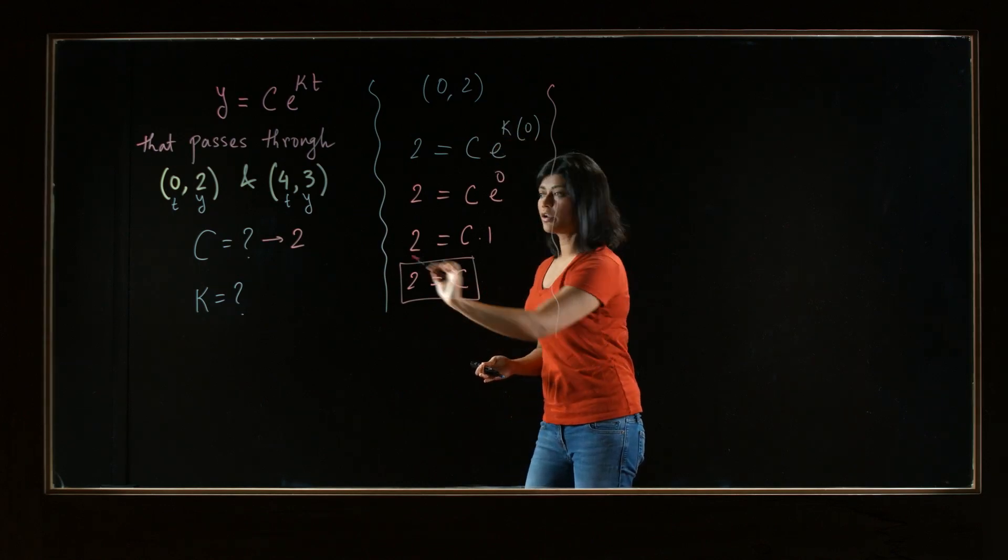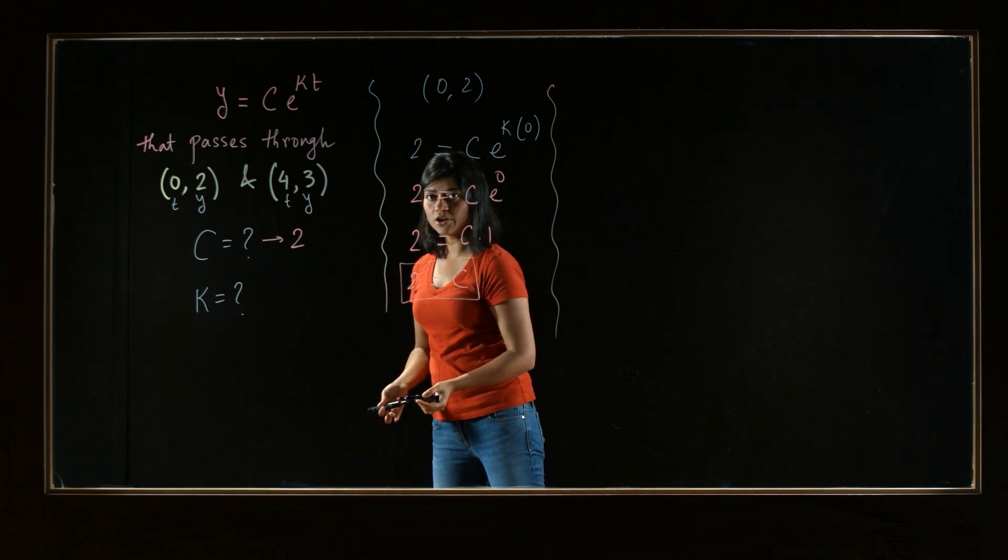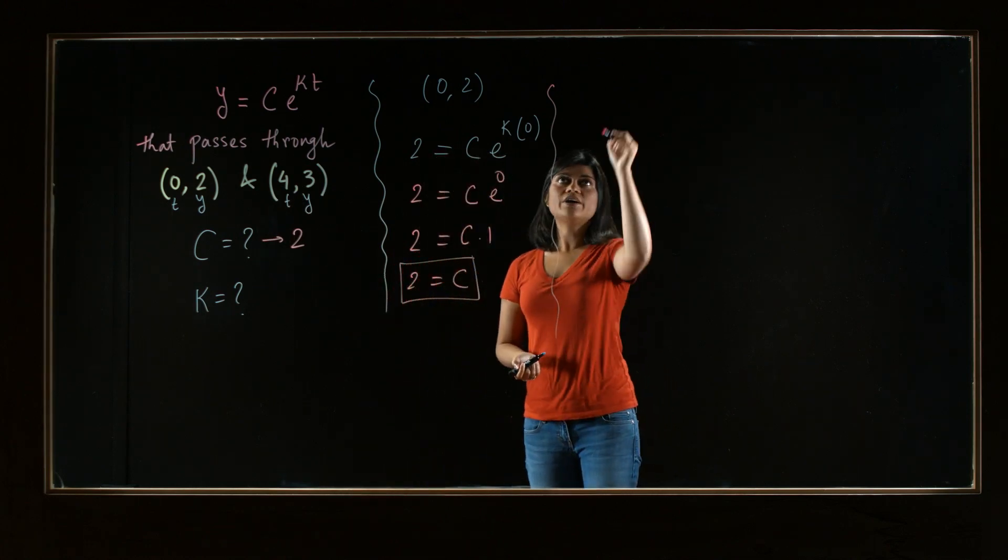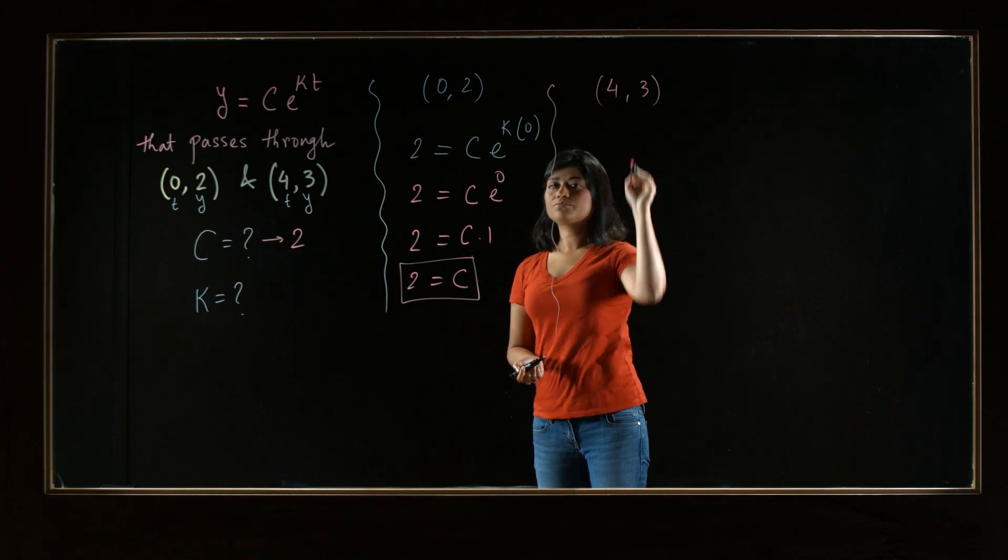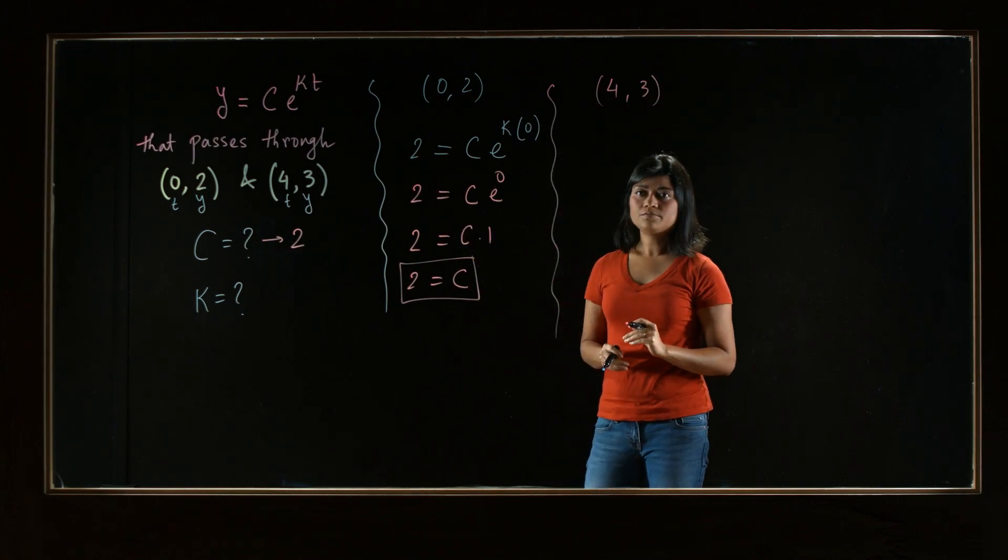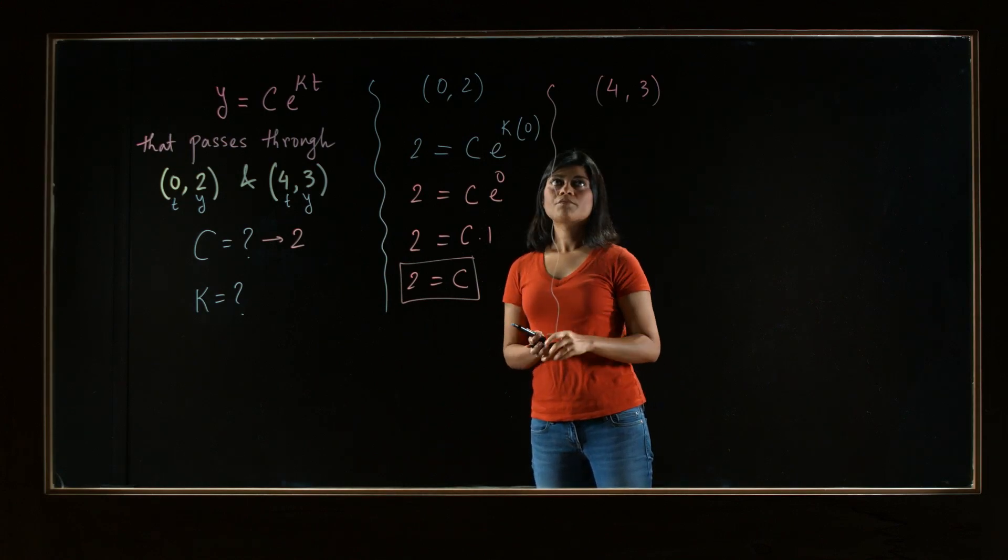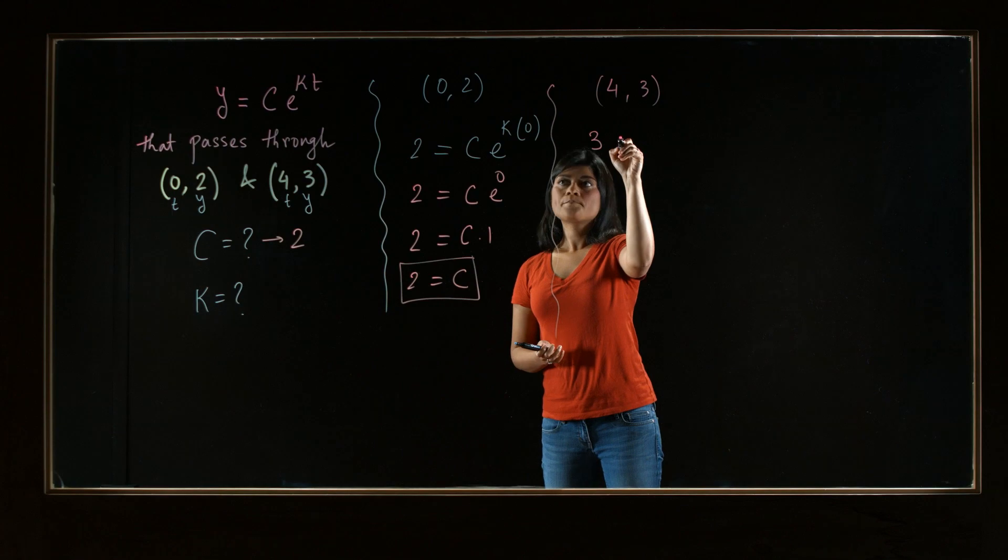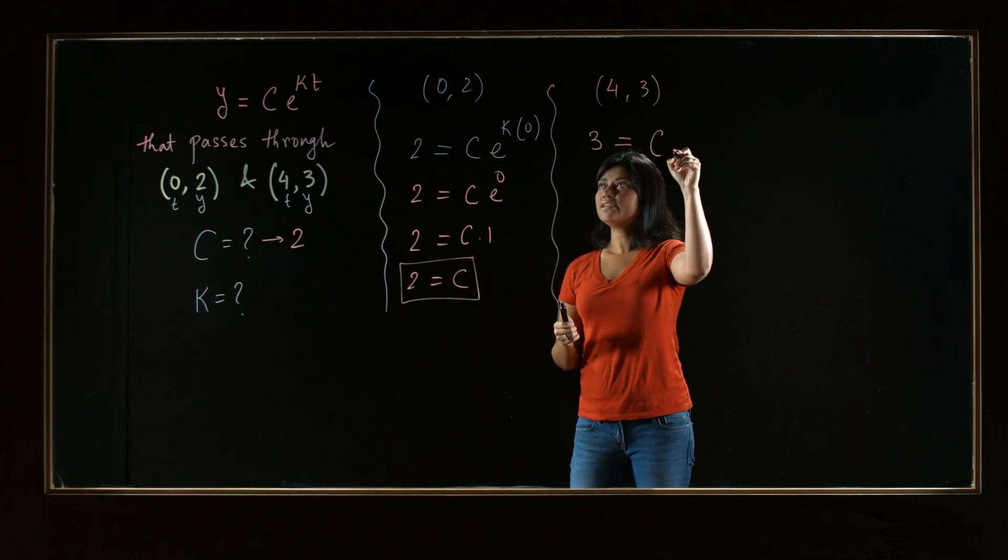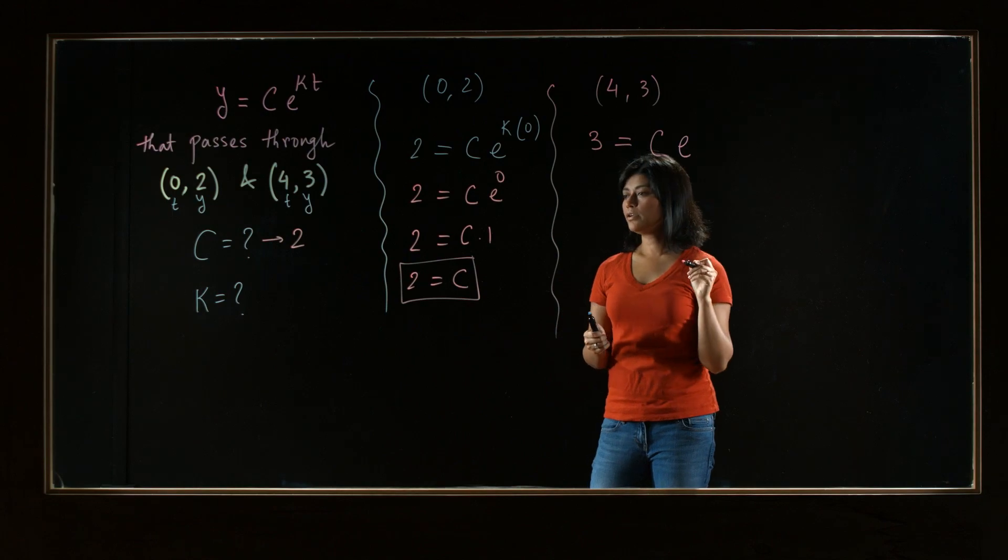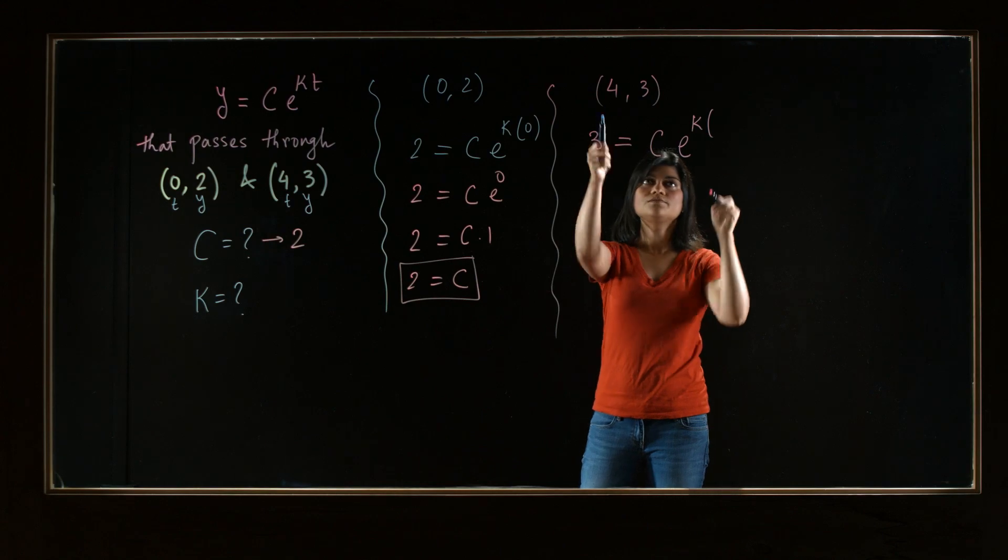So one of the points gave us one constant. So the other point will give us the other constant, k. So let's try that next. So now we have the point 4 comma 3 that the function is passing through. So plug in 3 for y and 4 for t. So the right hand side is c, e to the power k times t is 4.